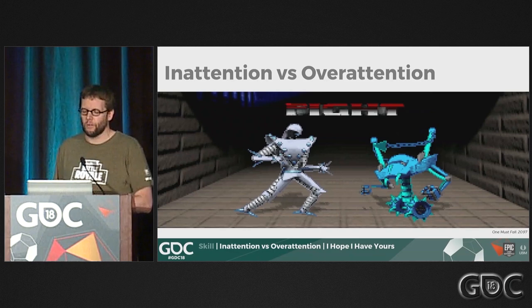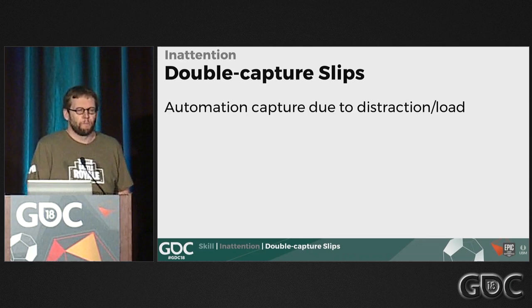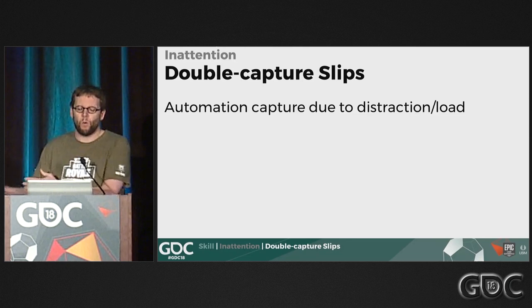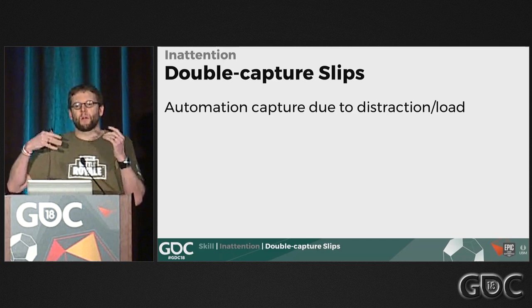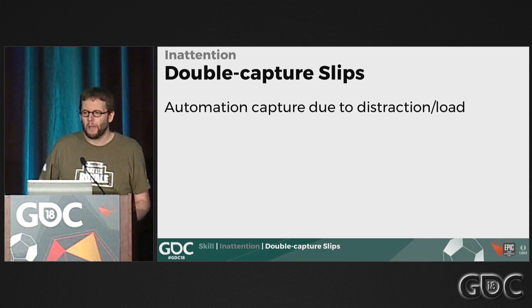The first type of inattention error is the double capture slip. This is where there are a couple of potential fast actions you could take, and because you're distracted or overloaded, the stronger one takes over.